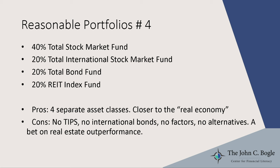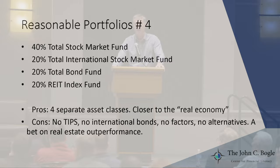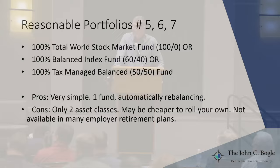The four-fund portfolio, popularized by Rick Ferri: take the three-fund portfolio and add a REIT fund in some percentage. You get an extra asset class because real estate is often not included in publicly traded stocks, and it's maybe a bit closer to what the real economy looks like. Still, there are no TIPS, no international bonds, no muni bonds, no factors, no alternatives, and it's a pretty decent bet on real estate outperformance.